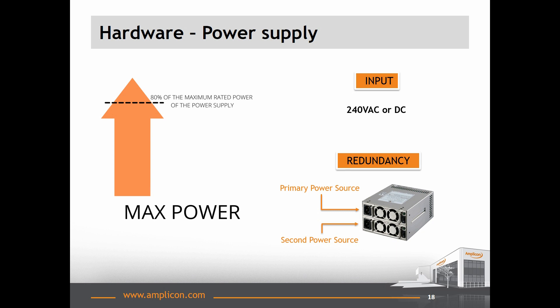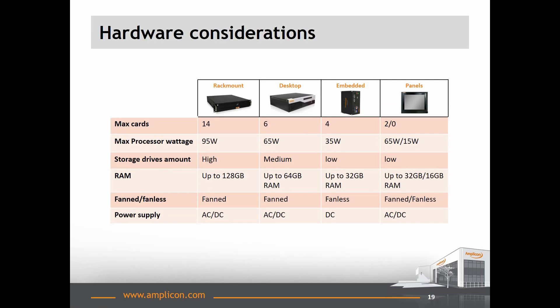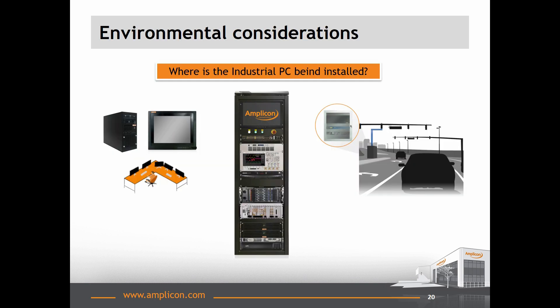Now we have worked out the majority of the hardware, we can start to piece together a specification. Depending on the choices you have made, you will choose one of the four computer categories for the type of system you need. For example, if you require large quantities of plug-in cards, you will be looking at a rack-mount system. If you only require a small amount of processing to be mounted inside a machine, you will be looking at an embedded system. As mentioned earlier, the physical location of the PC plays a crucial role in the final decisions. Once you have determined the hardware required to meet the software specs, you need to make sure it perfectly matches the environmental conditions of the location where you plan to install the industrial PC.